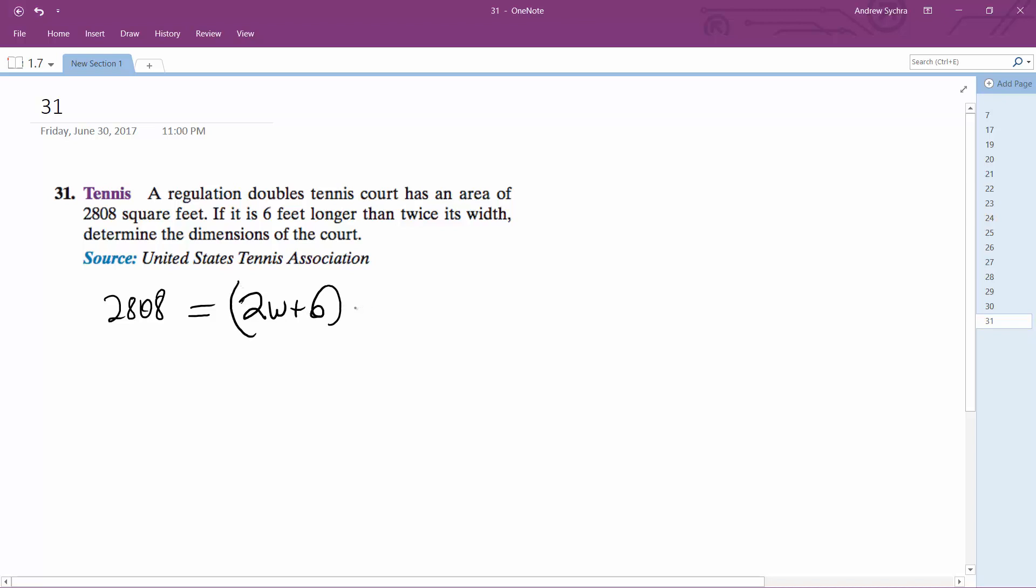So 2,808 equals 2w² + 6w. Rearranging this: 2w² + 6w - 2,808 = 0.